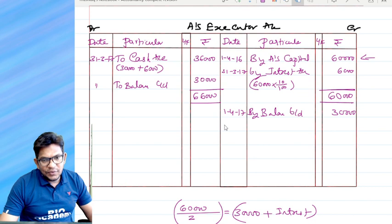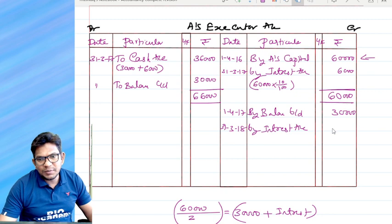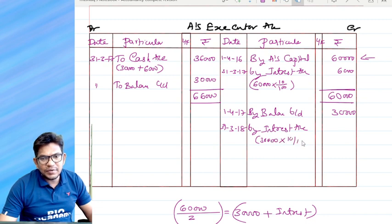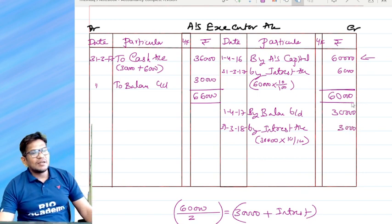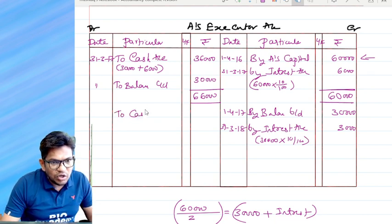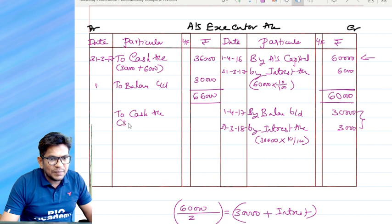Now, second year, by interest account. How much interest? Same, 30,000 into 10%, that comes to 3,000. 3,000 is the amount. Now we are paying the installment. How much? Second installment, that is 33,000, because total amount we are paying along with the principal as well as the interest. Principal was 30,000 plus interest is 3,000.